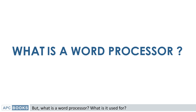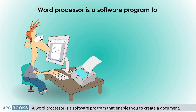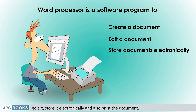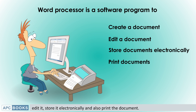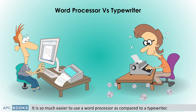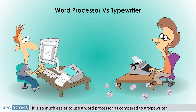What is it used for? Let's find out. A word processor is a software program that enables you to create a document, edit it, store it electronically, and also print the document. It is so much easier to use a word processor as compared to a typewriter.